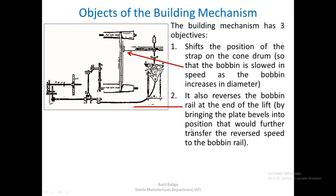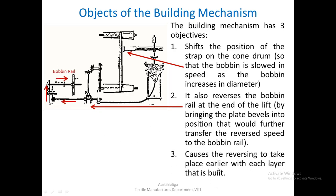The third objective of the building mechanism is to cause the reversal to take place earlier with each layer being built, in order to build the tapering ends on each side of the bobbin — top and bottom. One needs to reverse the bobbin rail slightly earlier with each layer.